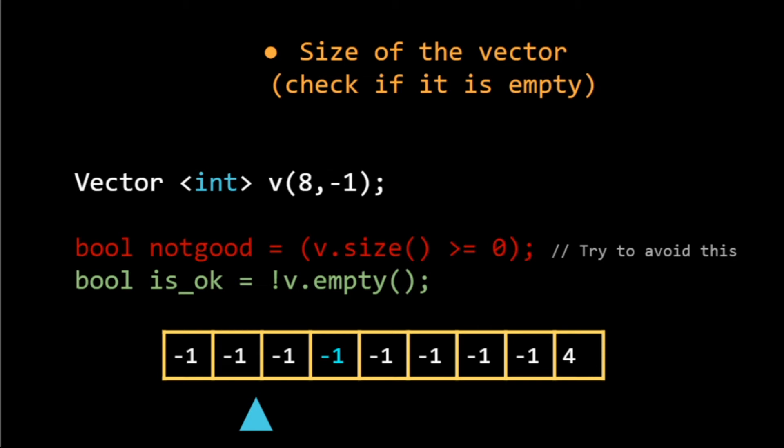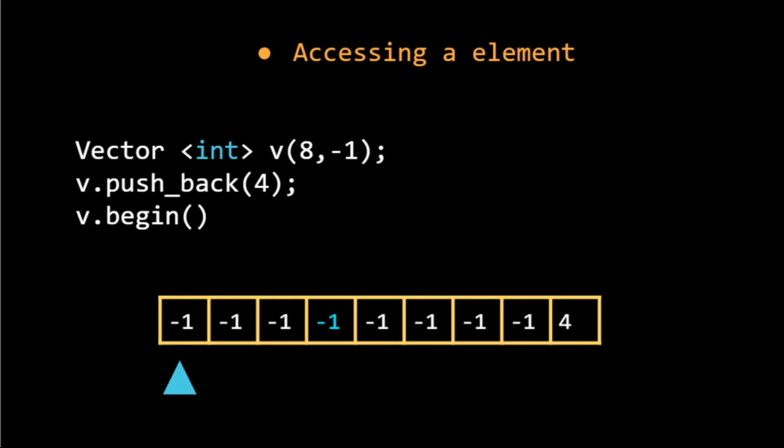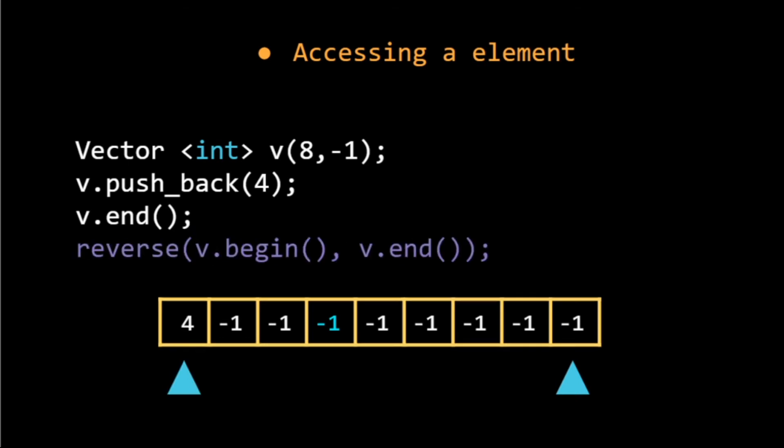For accessing an element, v.begin() gives us the starting point of the array whereas v.end() gives us the last point of the array. We can use these positions to do various tasks. For example, if we want to sort, we can just write sort from v.begin() to v.end(), or we can reverse the array by writing reverse from v.begin() to v.end().